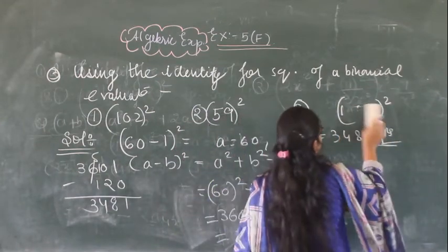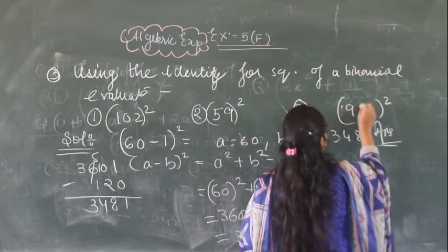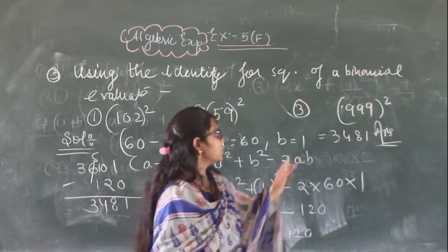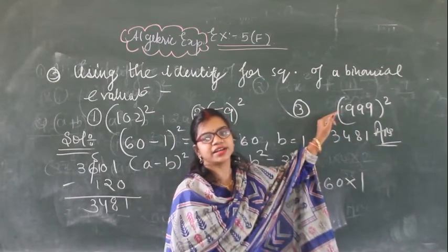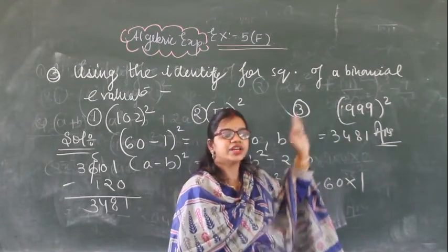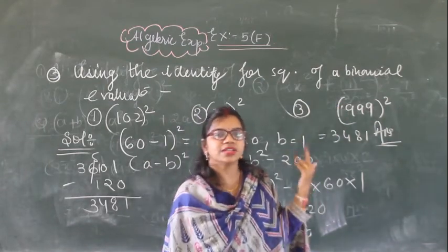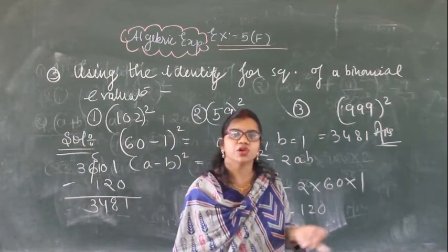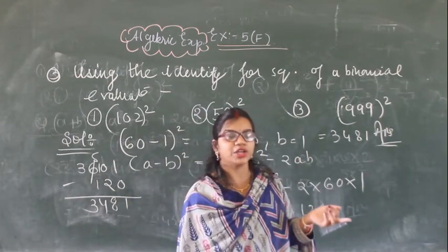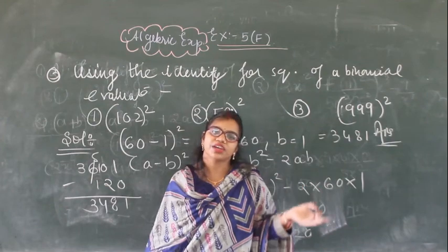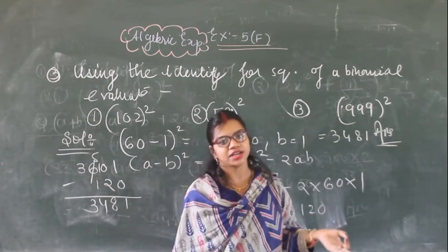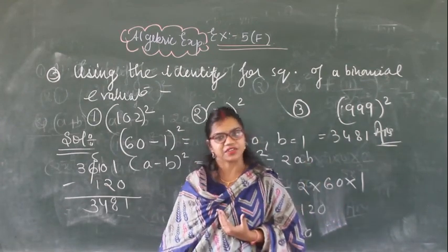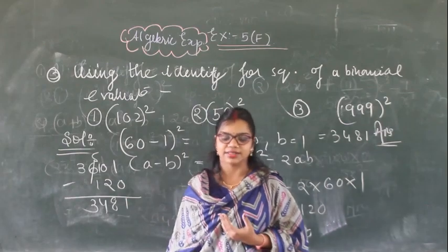The last question is 999 whole square. You can write this as 1000 minus 1, whole square. This is in the A minus B whole square formula. Substitute A is 1000 and B is 1 into the A minus B whole square formula and you will get the answer.